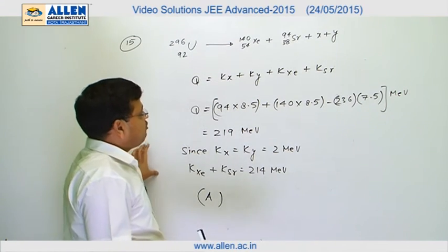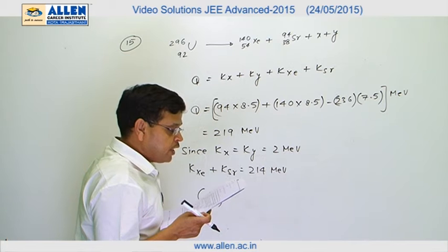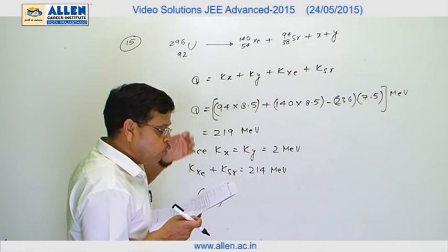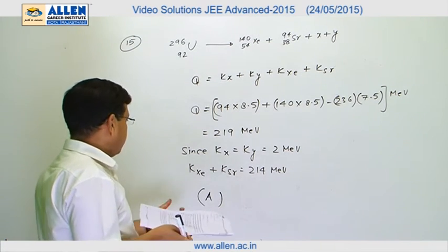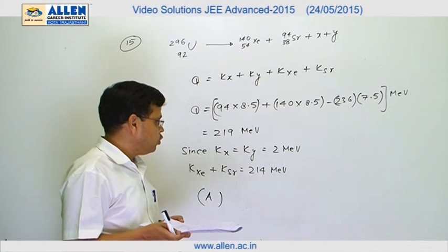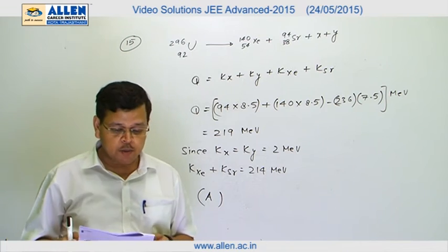Now, kₓ and kᵧ, it is given that they have the same kinetic energy, that is 2 MeV. So that leads us that the sum of the kinetic energy of xenon and strontium is equal to 214 MeV.